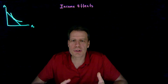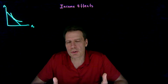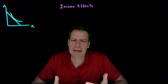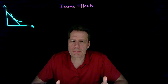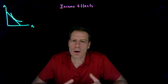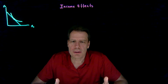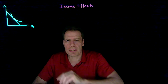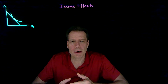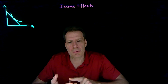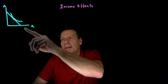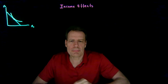Now that we know how to find the consumer's optimal consumption bundle given her economic circumstances, we can ask how will that optimal consumption bundle change as her economic circumstances change? Her economic circumstances are what forms her budget constraint, and we know that her budget constraint is formed by her income and the prices that she faces. The prices form the slope and the income determines the size of that budget.